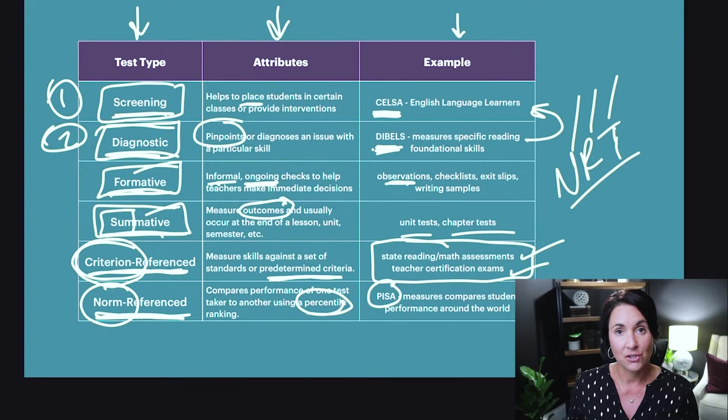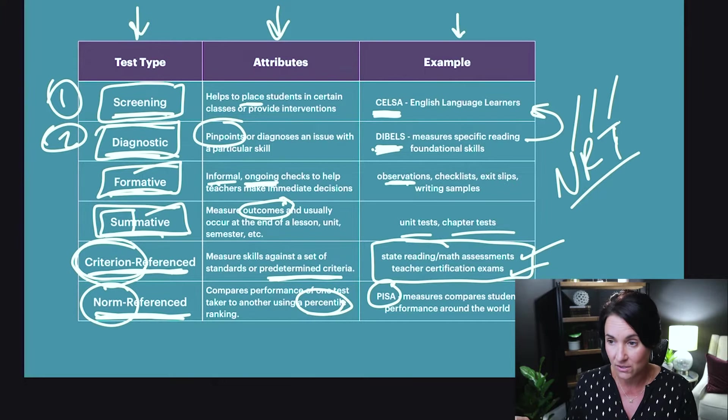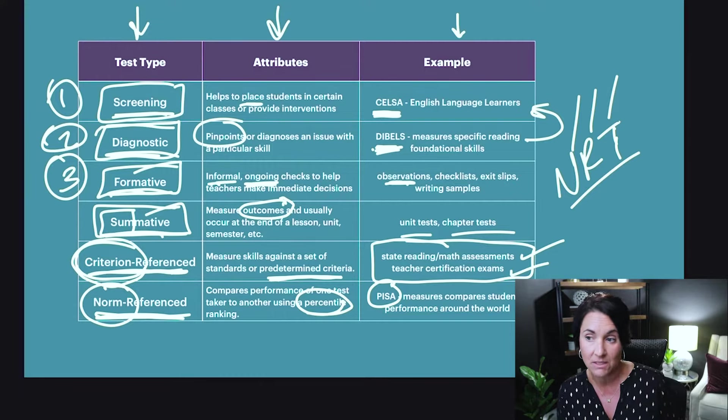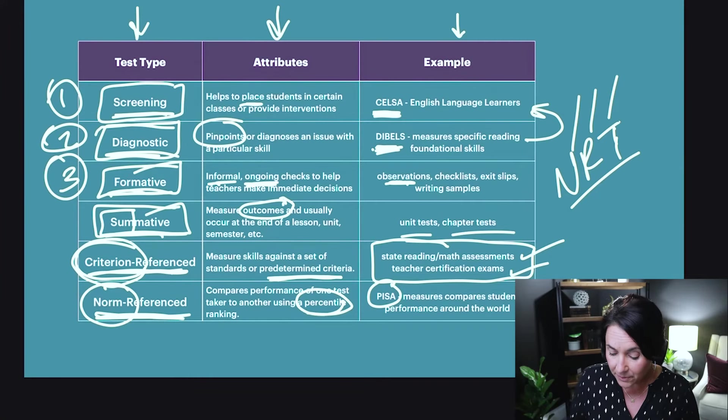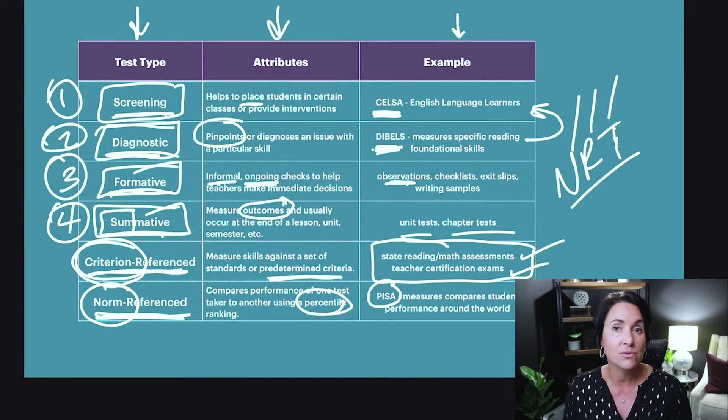Then while you administer your lessons and decide who's going to get what lesson and how you're going to intervene, you are consistently using formative assessments to measure students' skills, to move students in and out of groups. You're observing, watching, doing little mini quizzes, and making decisions constantly throughout the day, week, month, and year in order to meet the needs of every student. Then periodically at the end of units and chapters you use those summative assessments.